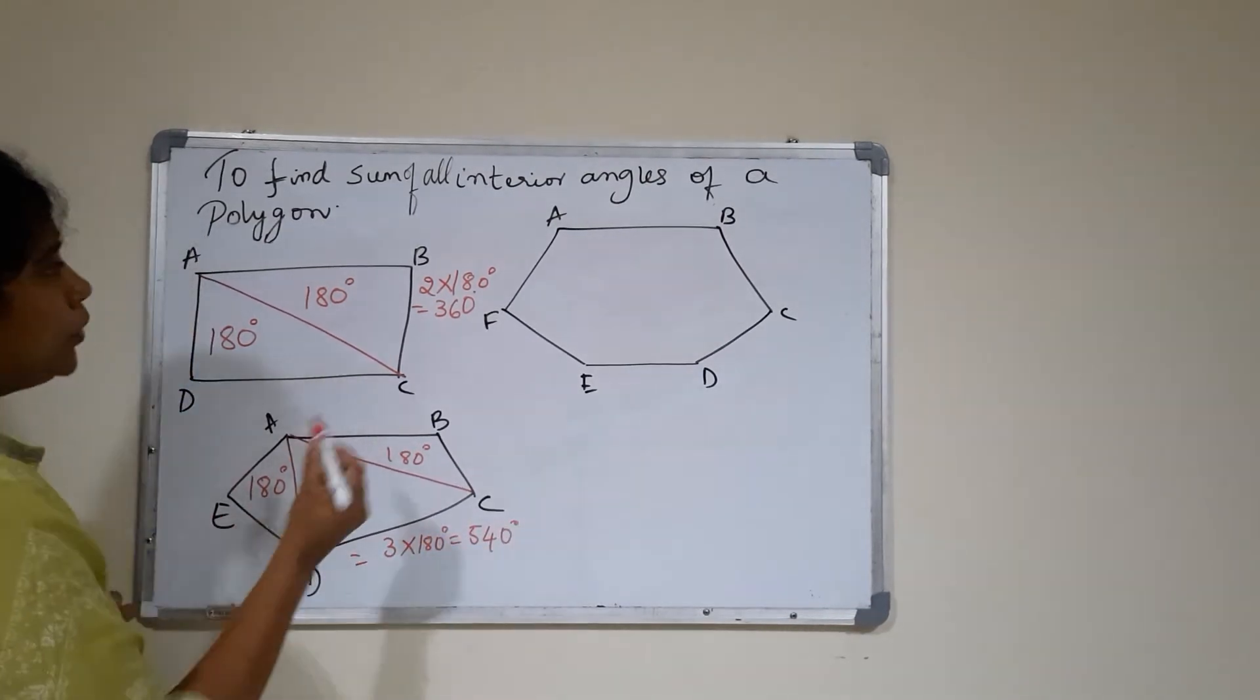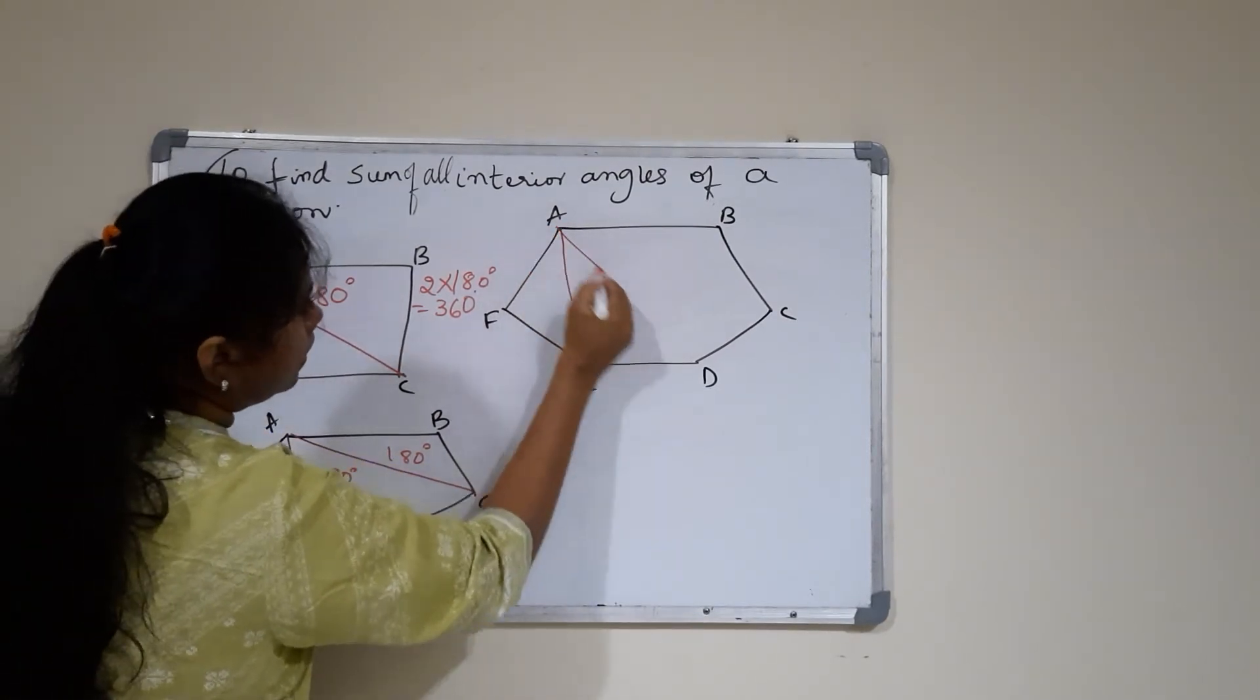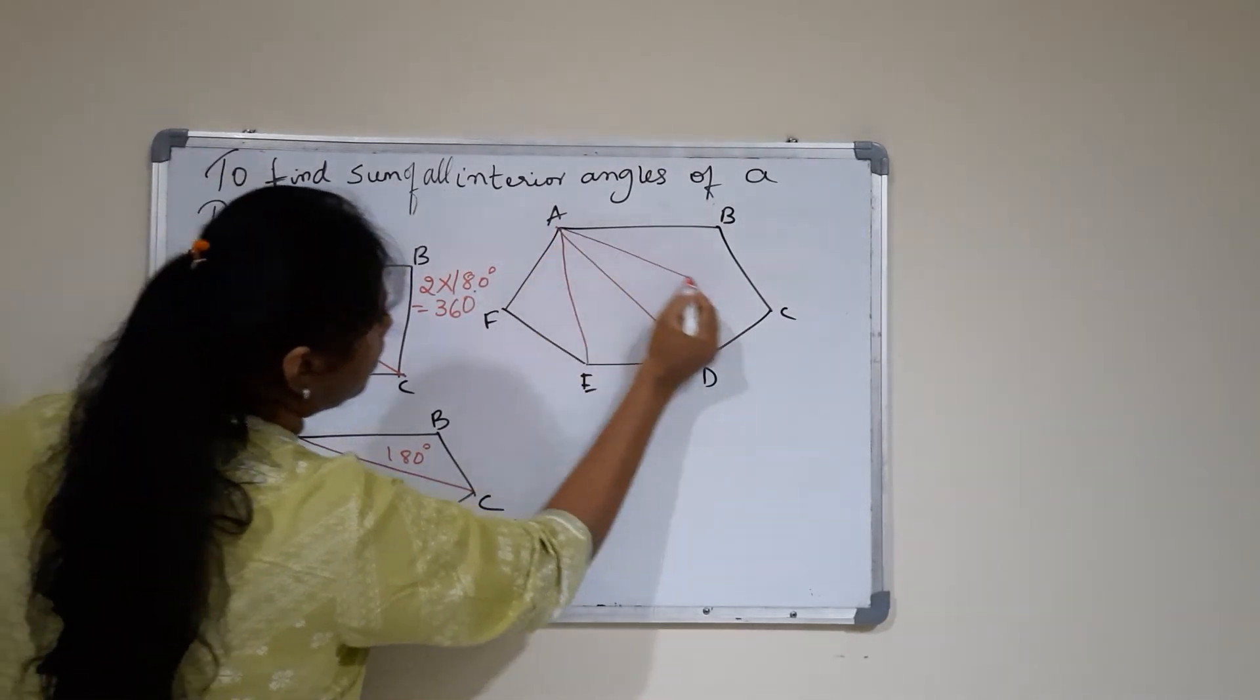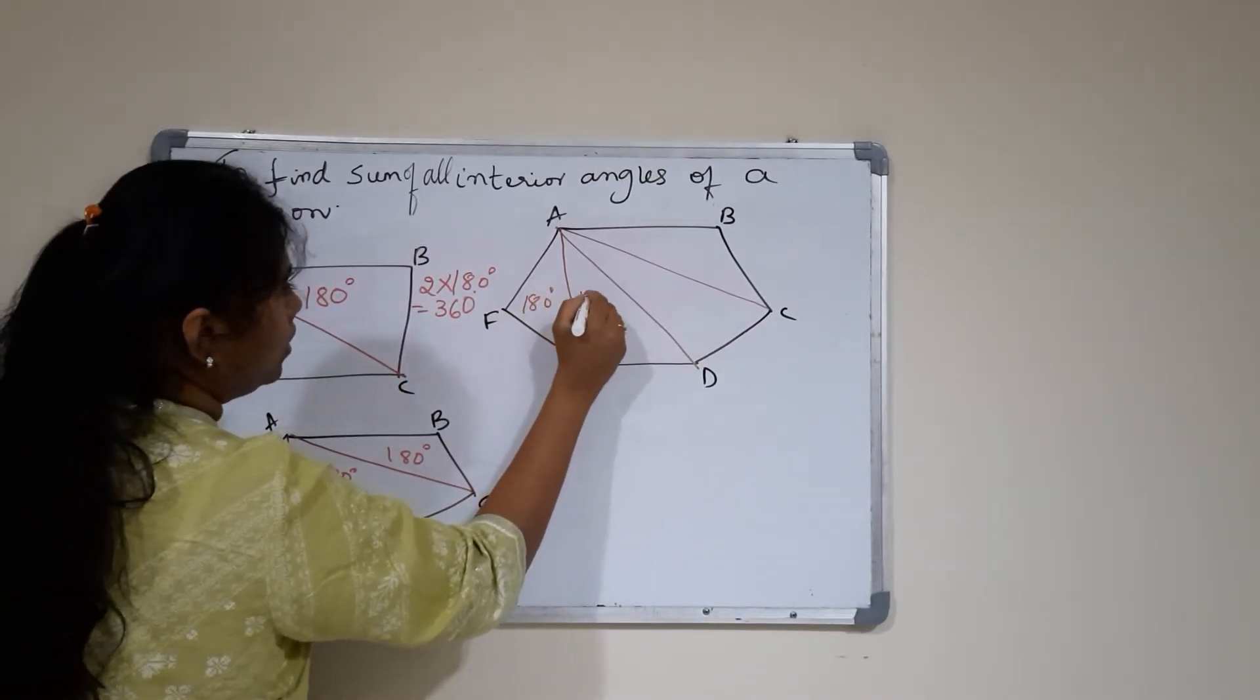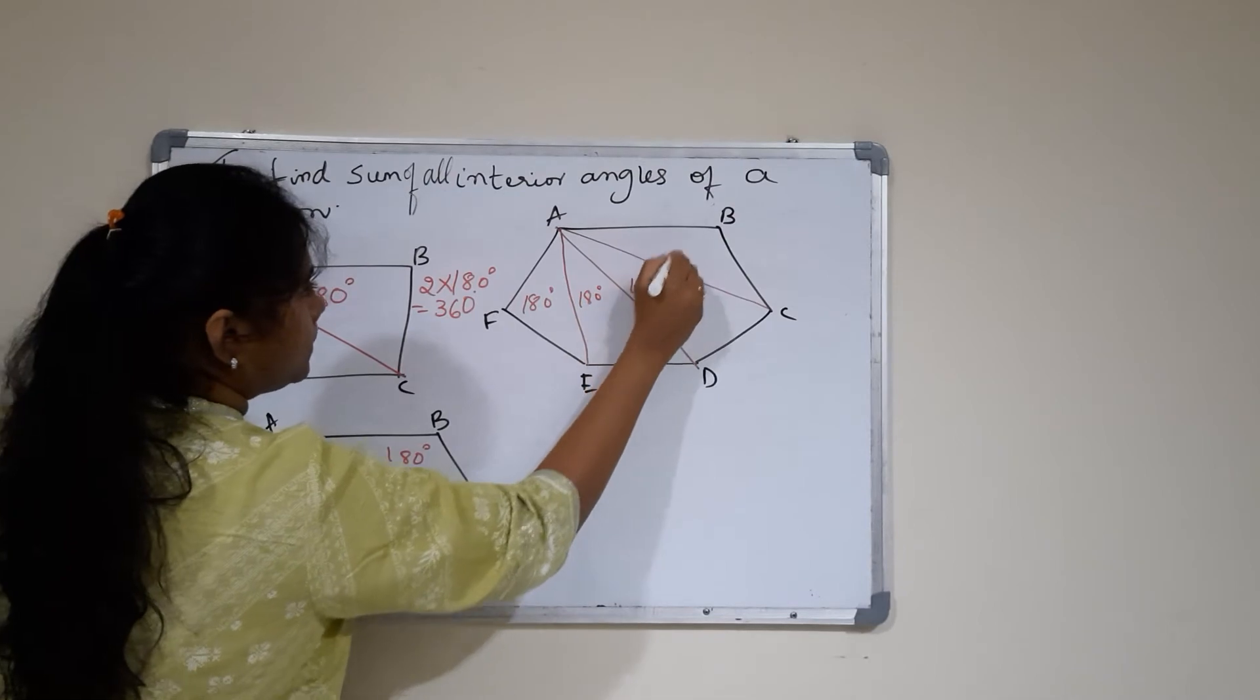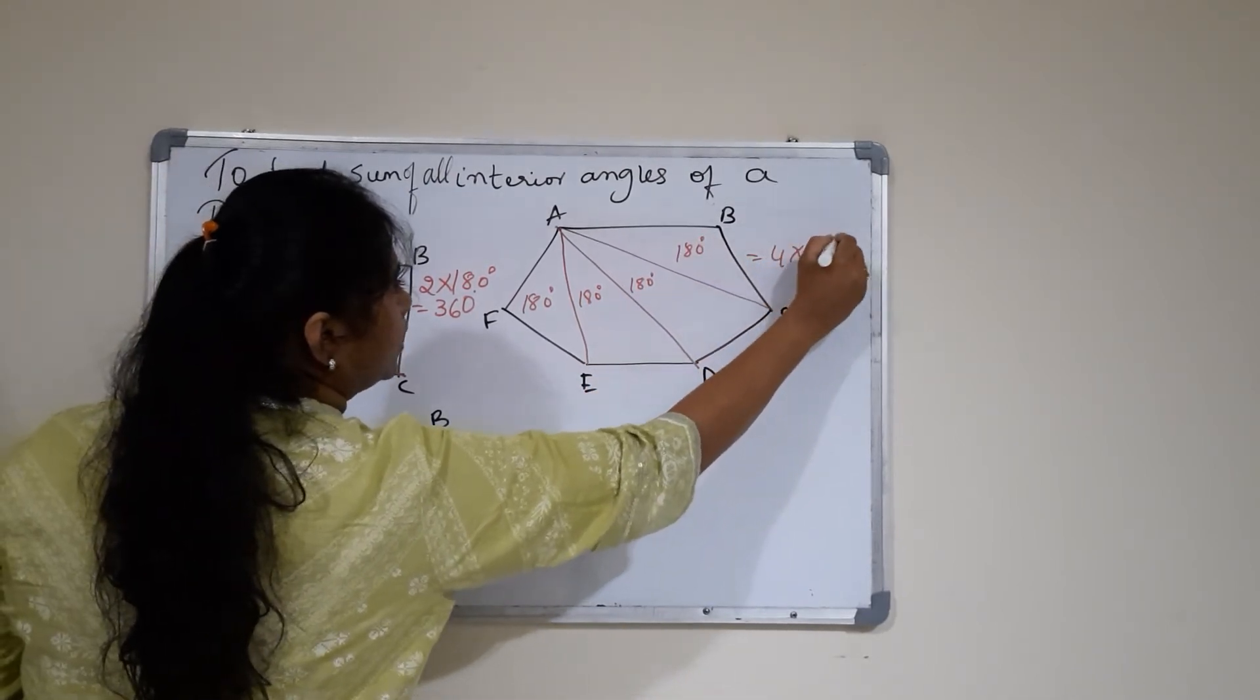Just like that, I will do it for a hexagon as well. With respect to one vertex, I could draw three diagonals and the triangles formed are 4. That is 4 into 180, which is 720 degrees.